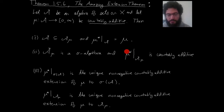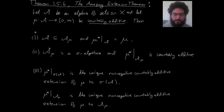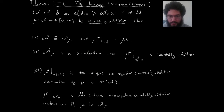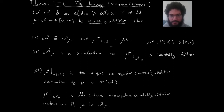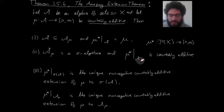Also, if you look at mu star restricted to A_mu, then that's countably additive. So when you extend, you preserve countable additivity — that is a huge deal. Remember, even though A_mu is large, mu star is originally defined on something much larger: the collection of all subsets of X. Any non-negative function gives an outer measure defined on all sets. This is why we restrict to A_mu and assert countable additivity there.